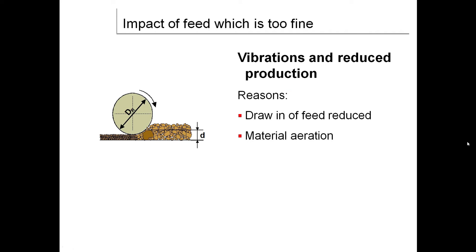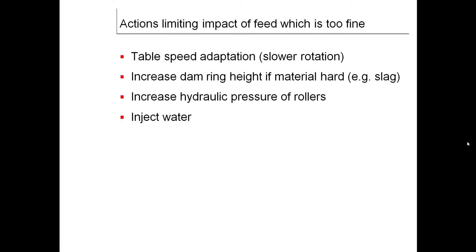Impact of feed which is too fine: vibrations and reduced production due to browning of feed, reduced material aeration. Actions for limiting impact: table speed adaptation with slower rotation to increase hammering height. If material is hard like slag type, increase hydraulic pressure of rollers and inject water.